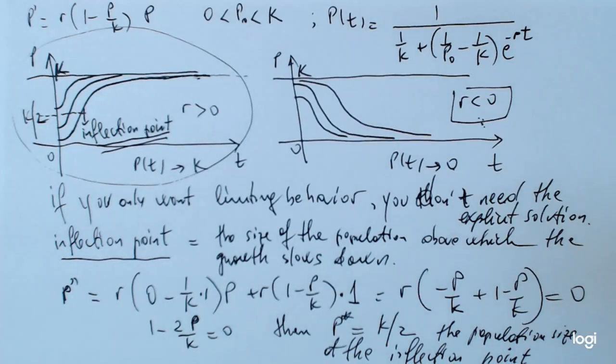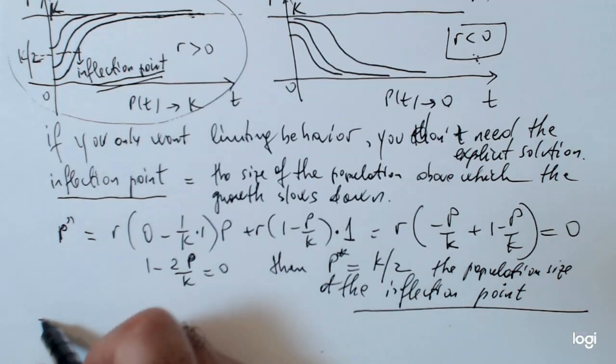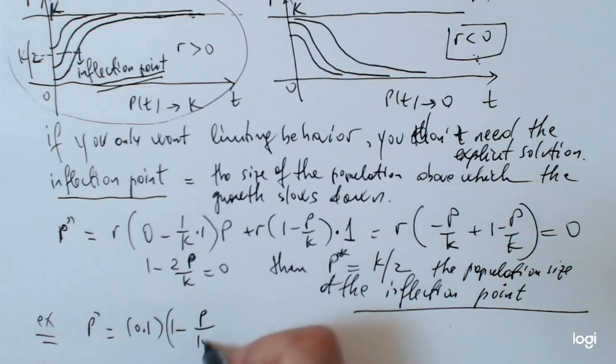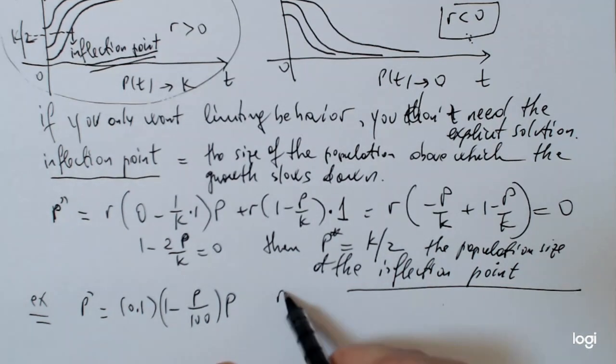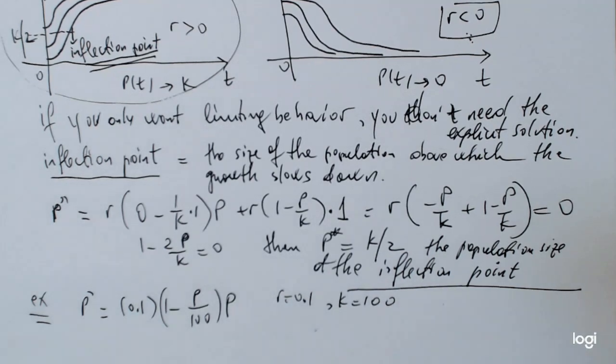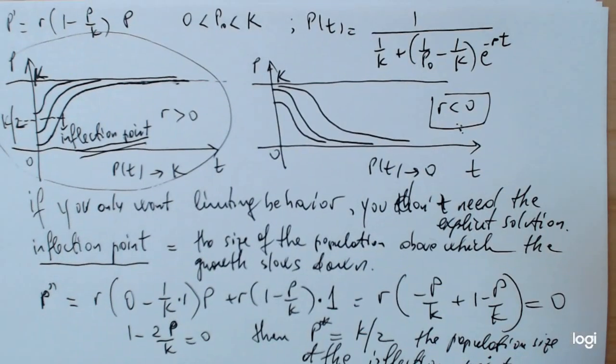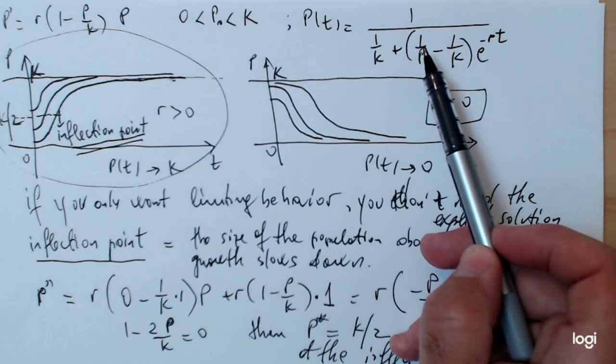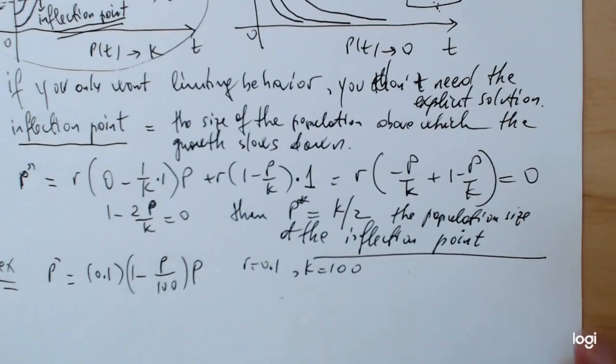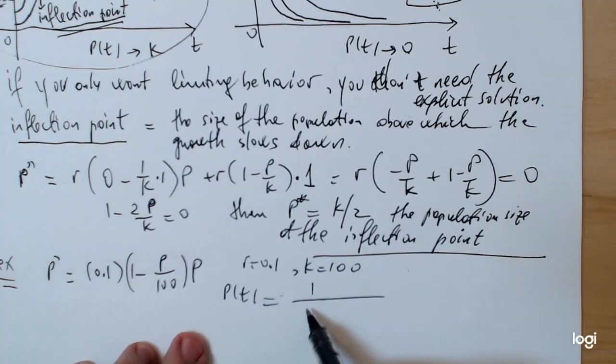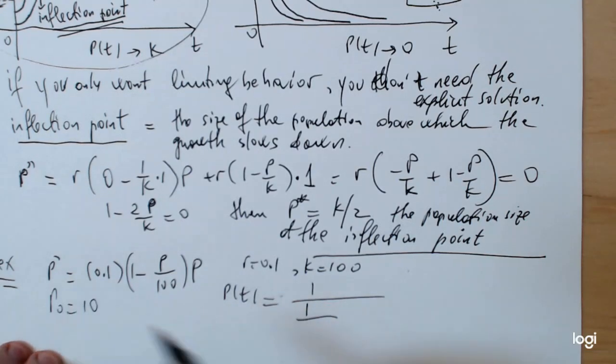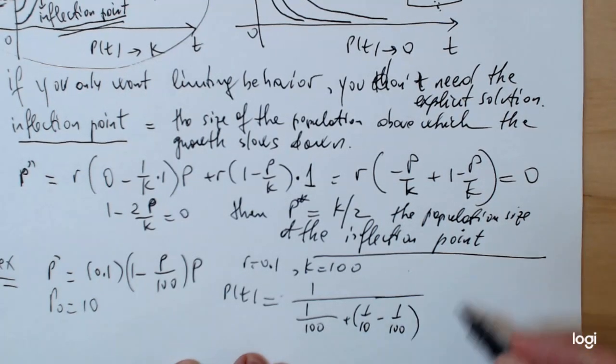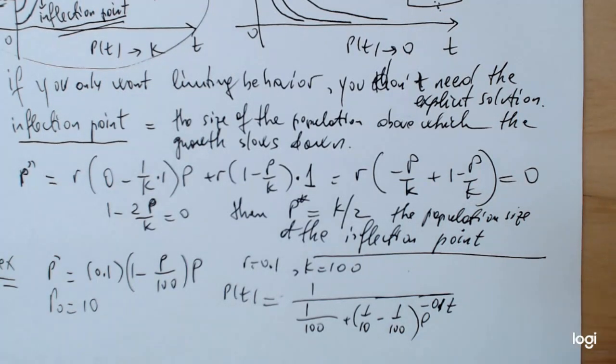So, when do you use, actually, the explicit solution? Not too often. In this week, we use it once or twice. Like, for example, let's say, let's give an example here. Suppose I have p' equals 0.1, 1 minus p over 100 times p. You should get used to recognize what constitutes r and k. And you should be able to use previous results. So, once we solve the logistic equation once, you don't have to do it again for the homework. Use directly the equation and just plug in the appropriate numbers. So, for example, here, p of t, the explicit solution is 1 over 1 over 1,000. Oh, I forgot to mention p0. Let's say p0 is 10, the initial condition. So, 1 over 100 plus 1 over 10 minus 1 over 100 e to the minus 0.1t.